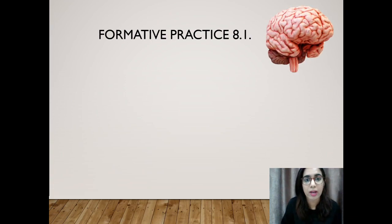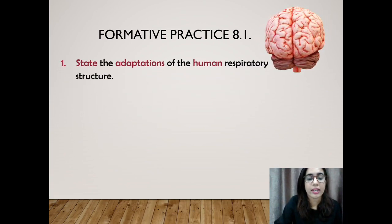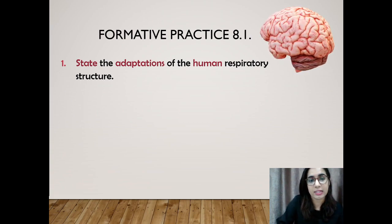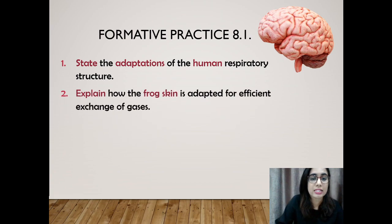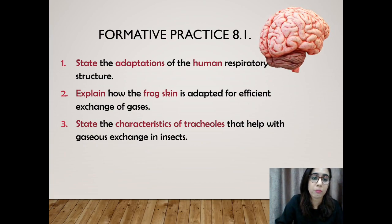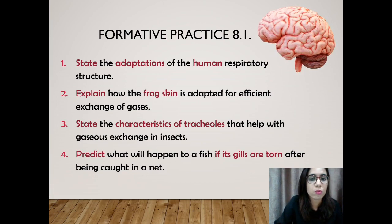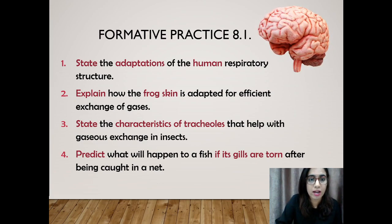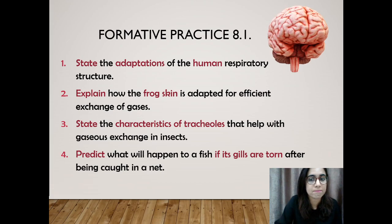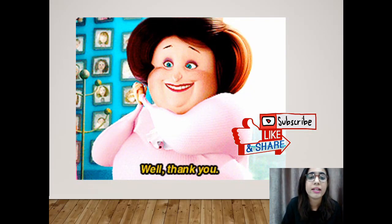With that we are done. At the end of the subtopic, you have to do the formative practice. Today you are going to do formative practice 8.1. The questions are: firstly, state the adaptations of the human respiratory structure. Secondly, explain how the frog's skin is adapted for efficient exchange of gases. Thirdly, state the characteristics of tracheoles that help with gas exchange in insects. And finally, predict what will happen to a fish if its gills are torn after being caught in a net. With that, we are done for today's lesson. I hope you can answer all the questions. Don't forget to like and subscribe to my channel.